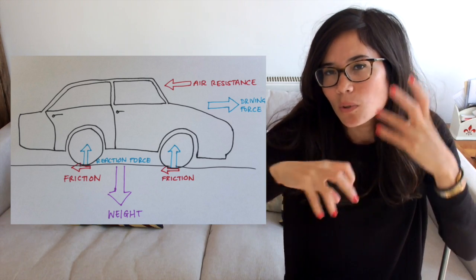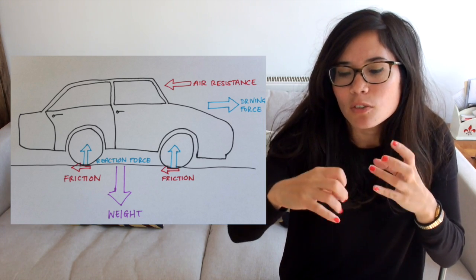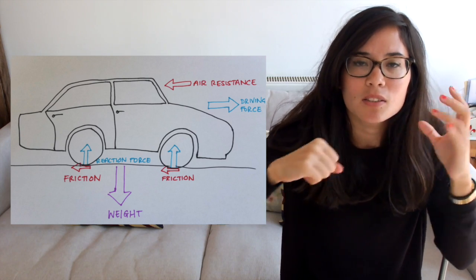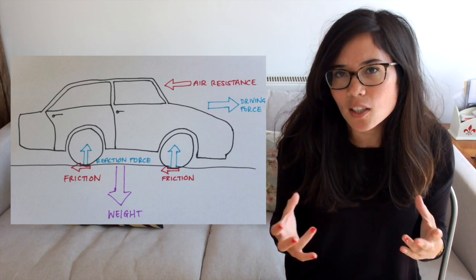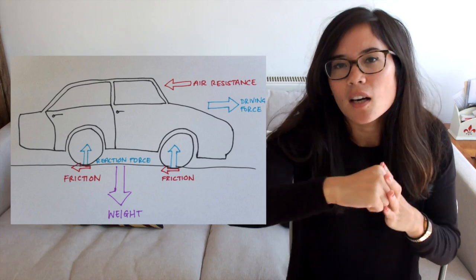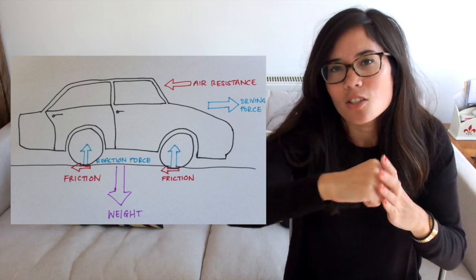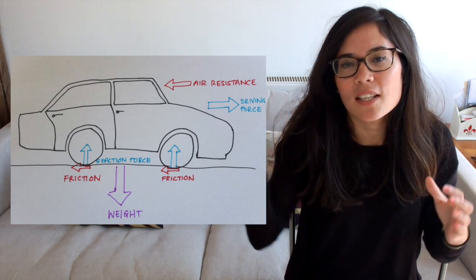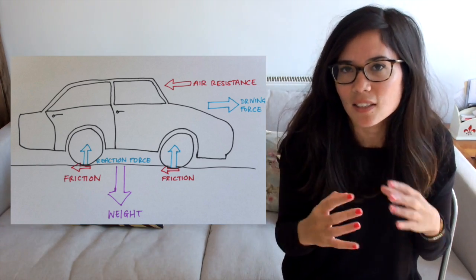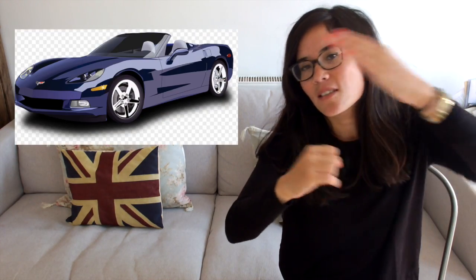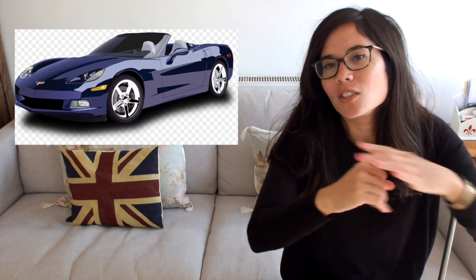Each air particle that hits will slow down the car. Overall, there'll be so many particles — millions of particles hitting — that the force can be quite large. So the faster the car, the larger the drag, the larger the air resistance, because more particles are hitting per second. Air resistance and drag also helps to explain the shape of certain cars. Certain sports cars will be a special shape — they'll be streamlined — and that's because the air is deflected upwards off the windscreen, rather than hitting the car and slowing it down.